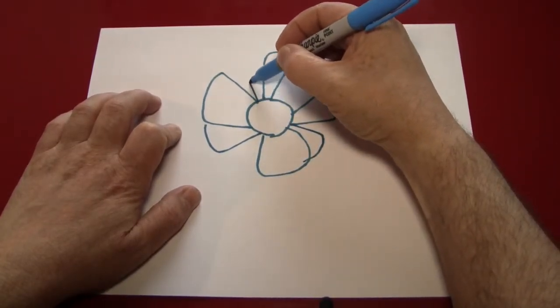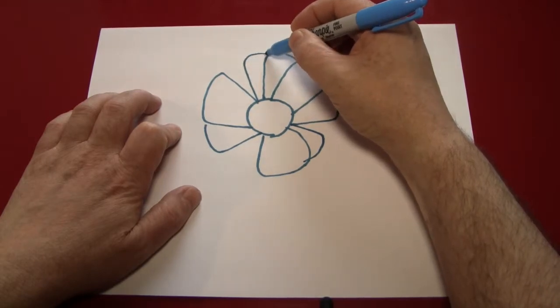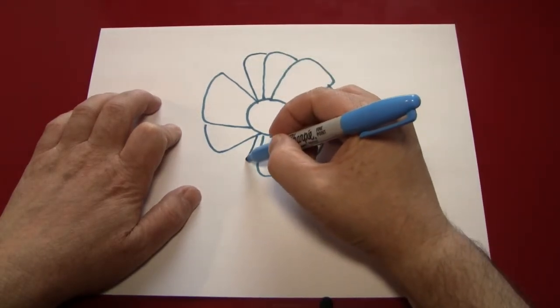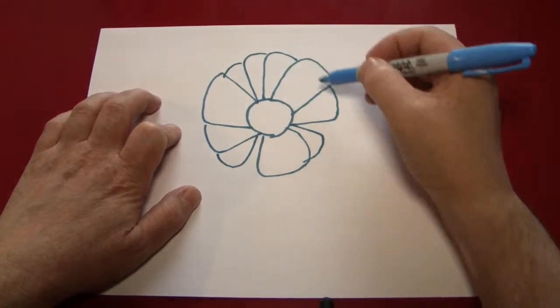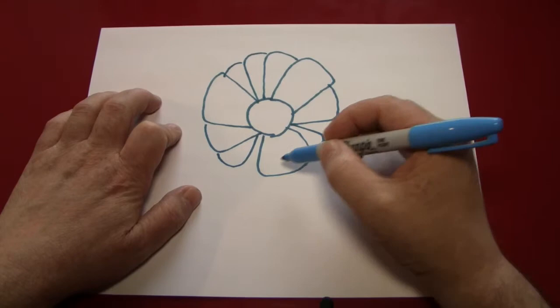When you've run out of room for doing this, the next thing you're going to want to do is make the last row of petals. The way we'll do that is by simply making little curves over the spaces that we have left over.